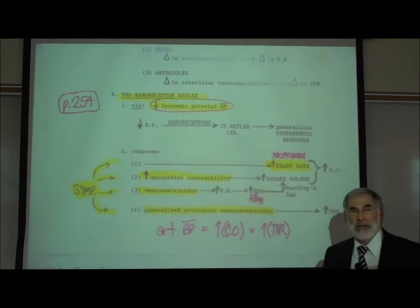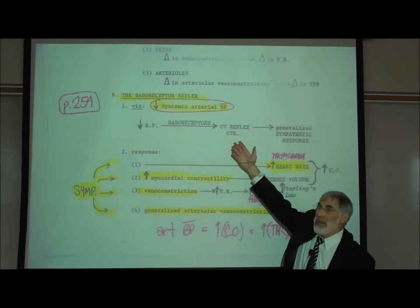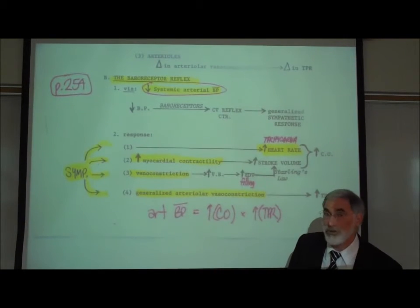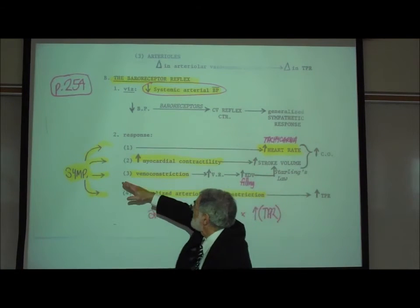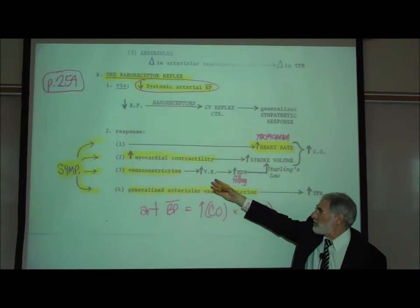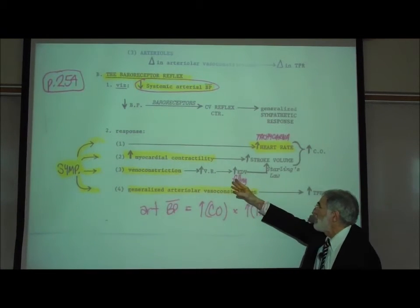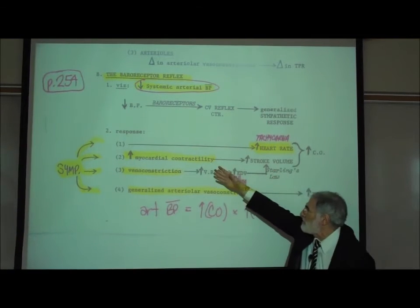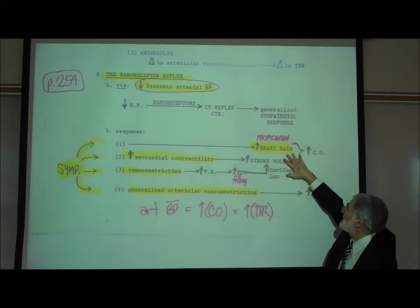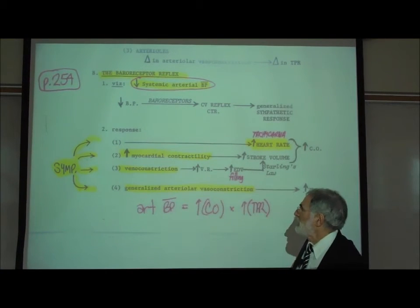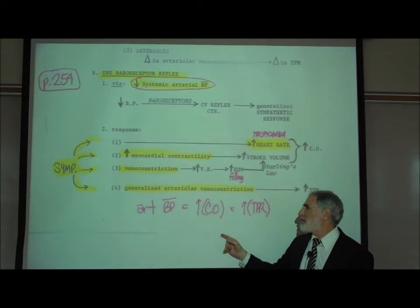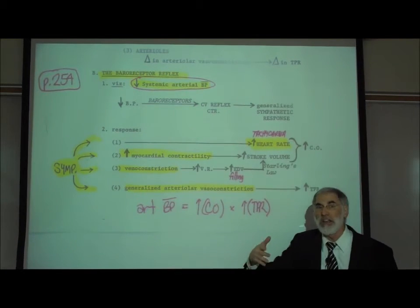The baroreceptor reflex: the drop in blood pressure is detected by baroreceptors, which send information to the cardiovascular reflex center, activating sympathetic autonomic motor neurons to the heart, the veins, and the muscular arterioles throughout the body. The sympathetics cause tachycardia, increased myocardial contractility, and venoconstriction. Venoconstriction increases venous return of blood to the heart, increasing filling of the ventricle and increasing stroke volume. Increased myocardial contractility and increased venous return both contribute to increased stroke volume, and together with tachycardia, these three things cause an increase in cardiac output. The sympathetic autonomic motor neurons also cause generalized arteriolar vasoconstriction, increasing total peripheral resistance. Increased cardiac output and increased total peripheral resistance together increase blood pressure.